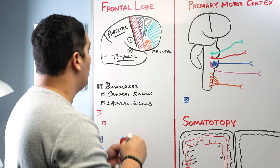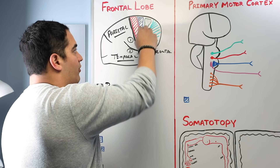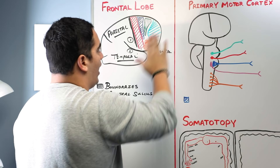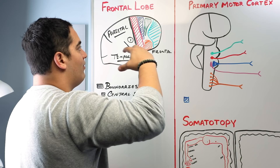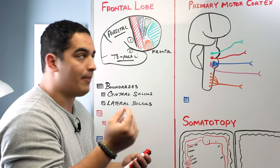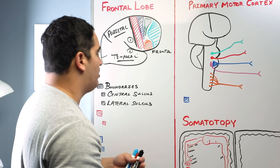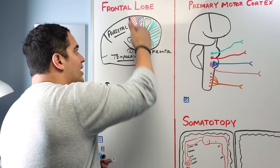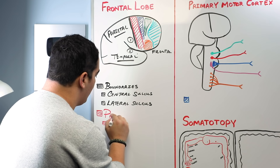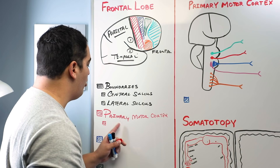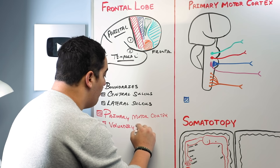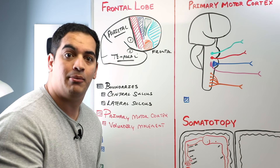Now we need to talk about some of the functional areas located within the frontal lobe, starting just anterior to the central sulcus and working forward. This first red portion, just anterior to the central sulcus, is a gyrus called the pre-central gyrus. The functional term for this gyrus is the primary motor cortex, and its basic function is involvement in voluntary movement, particularly of skeletal muscles.